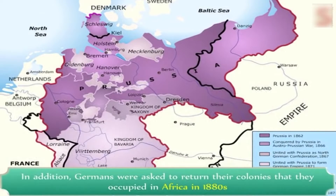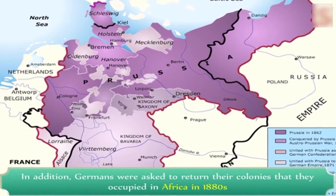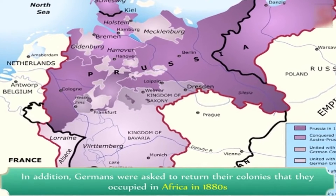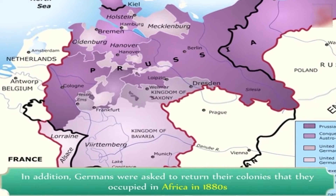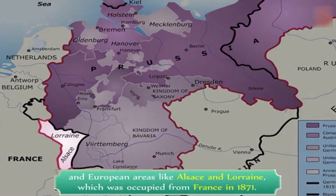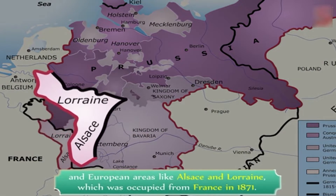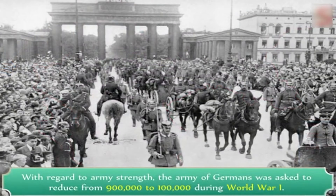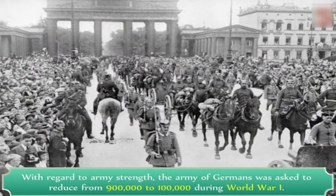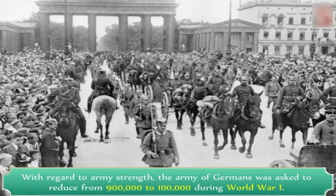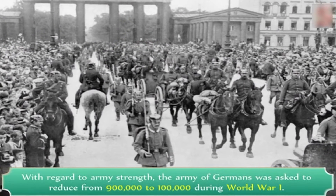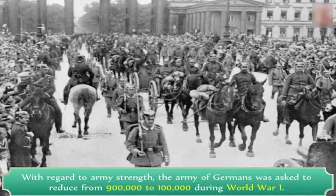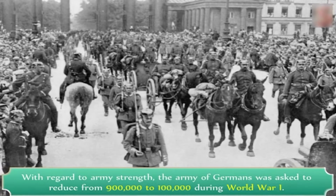In addition, Germans were asked to return their colonies that they occupied in Africa in the 1880s, and European territories like Alsace and Lorraine which was occupied from France in 1871. With regard to army strength, the German army was asked to reduce from 900,000 to 100,000.